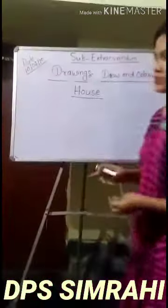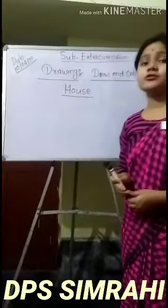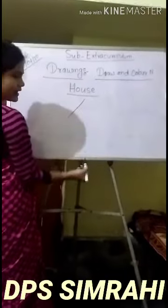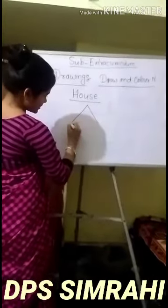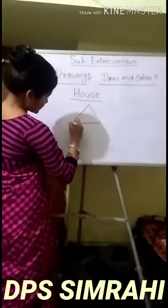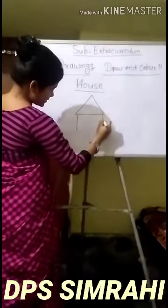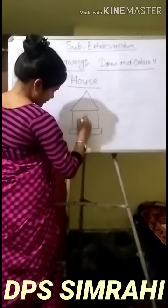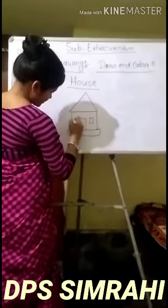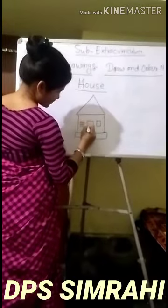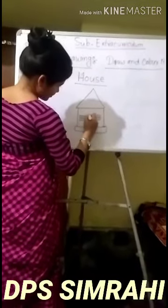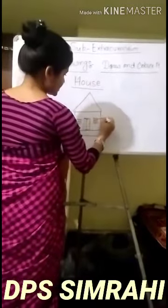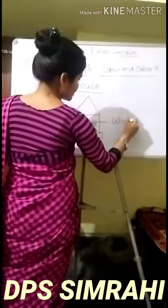Let's see what I am drawing now. Here is a house — how to draw a house. Let's see the board. First draw one line, next draw one line, next draw, and next, and next. What is this? Window — window.